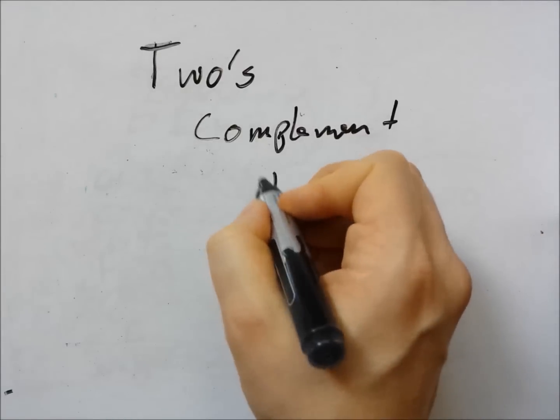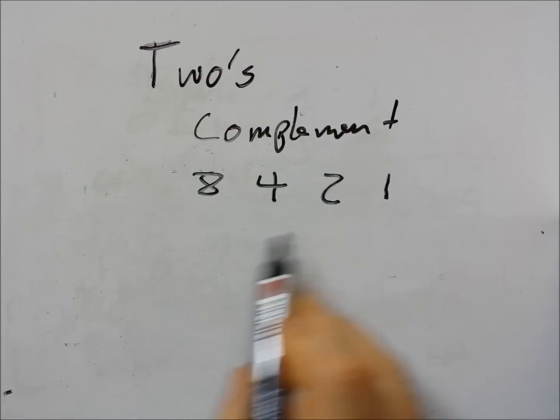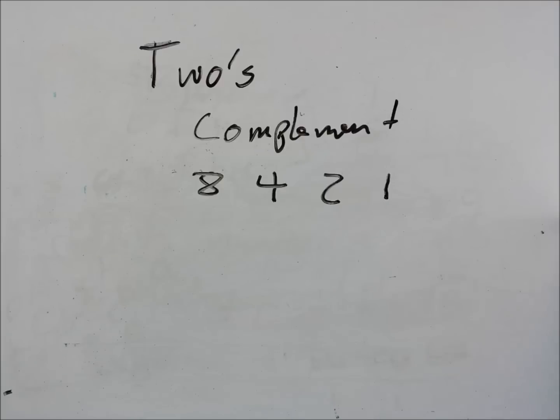One, two, four, eight. So we can represent the numbers from one to 15. If these are all one, eight plus four plus two plus one is 15.